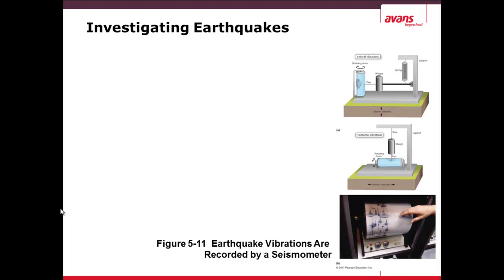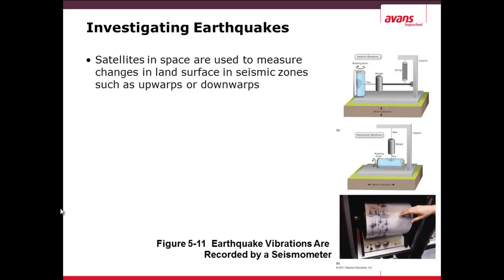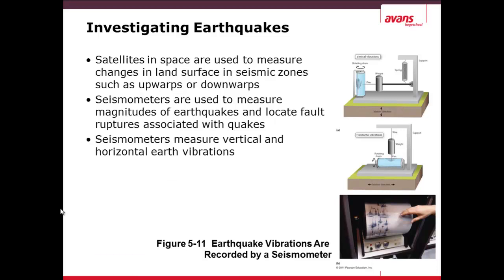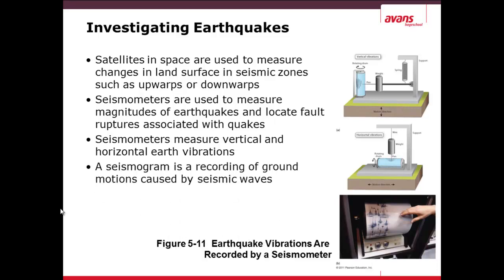Earthquakes are investigated and measured in basically two ways. The first is satellites in space, which measure the change in the land surface including upward or downward movement in seismic zones. The second is a seismometer. A seismometer is used to measure the magnitude of an earthquake and to find its location. It measures vertical and horizontal earth vibrations. A seismogram is the recording, often on paper, of the ground motions caused by the seismic waves.